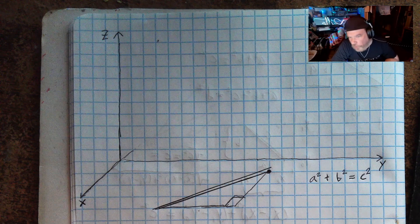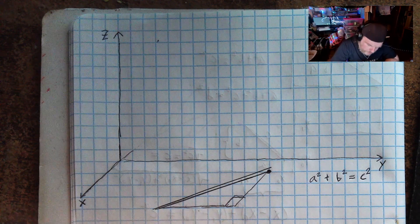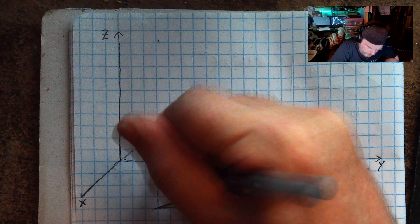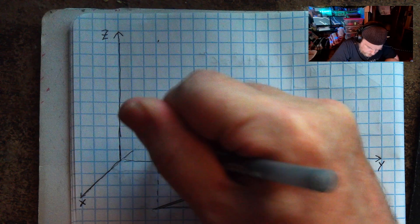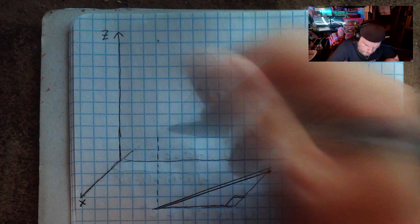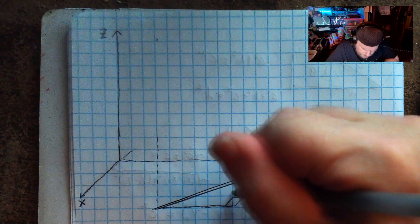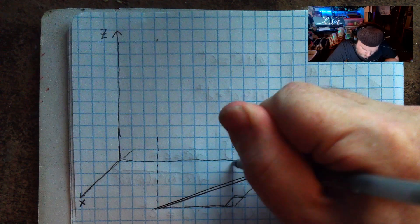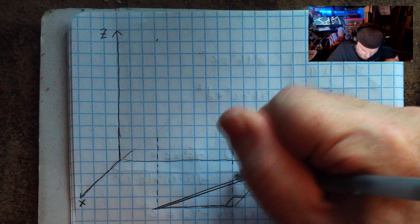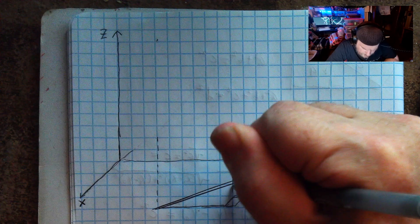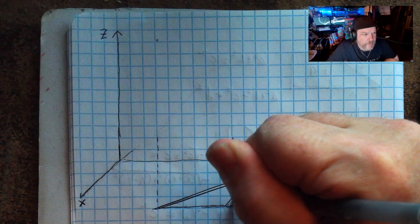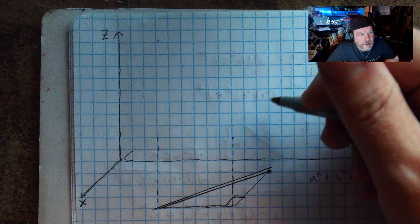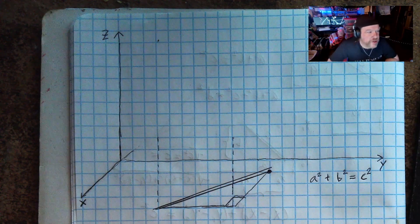Now I'm going to project my triangle here into a three-dimensional space. The reason I'm doing this is just a way — I'm drawing a picture that's in the book. Let me show you. No secrets here.